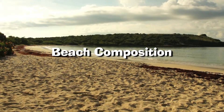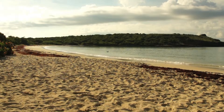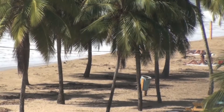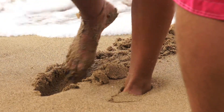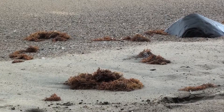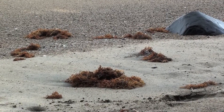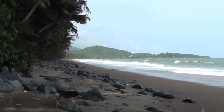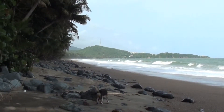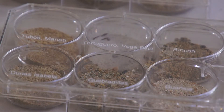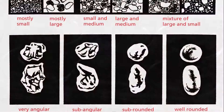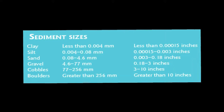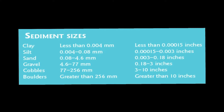Beach composition. Beaches consist of loose sediments of varying sizes. These can be formed by just one type of material, like sand, or by a mixture of materials such as sand, gravel, and boulders. Beach materials are classified according to size, as can be seen in the following table.